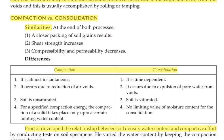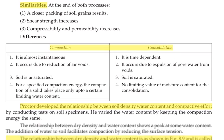Now the differences between compaction and consolidation: compaction is almost instantaneous, but consolidation is time-dependent. Compaction occurs due to the reduction of air voids, while consolidation occurs due to the expulsion of pore water from voids. In compaction the soil is unsaturated, whereas in consolidation the soil is saturated. For a specific compaction energy, compaction of the soil takes place only up to a certain limiting water content, but in consolidation there is no limiting value of moisture content.